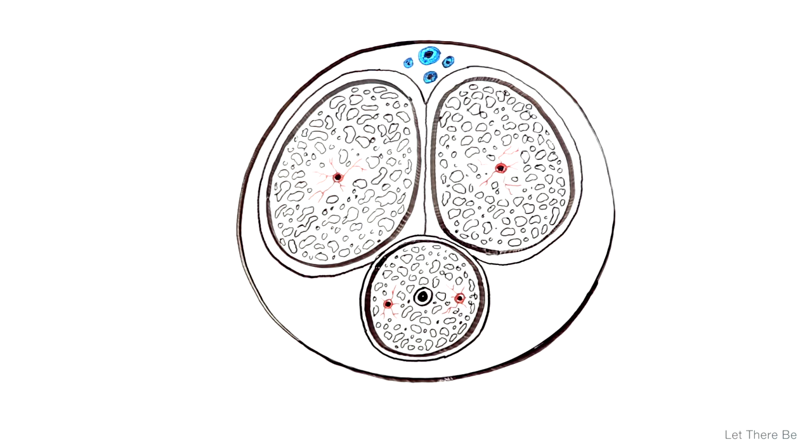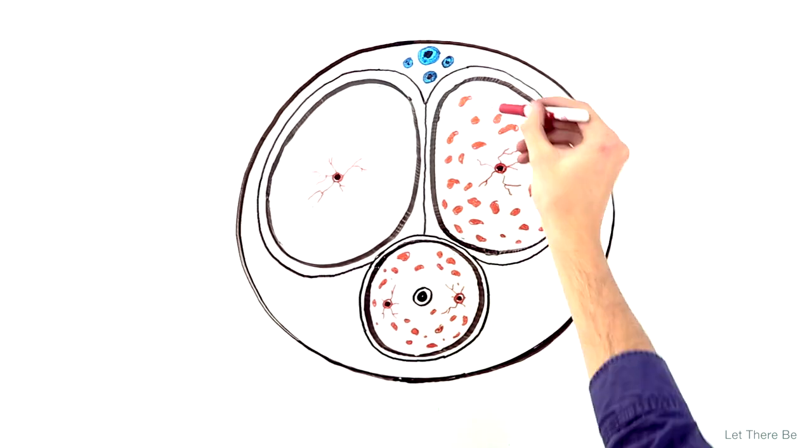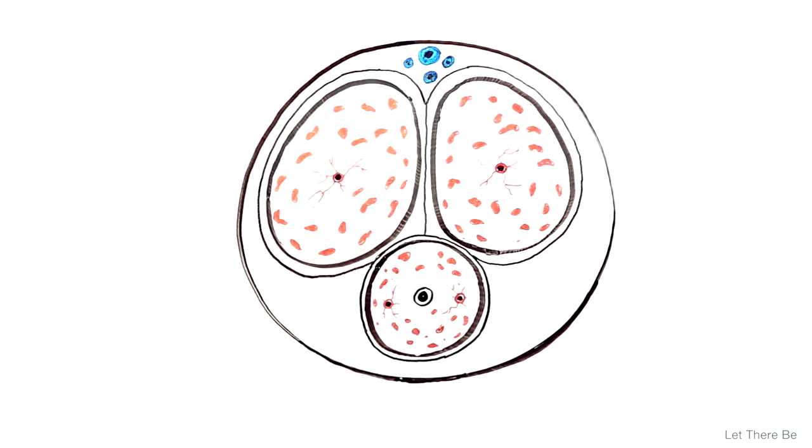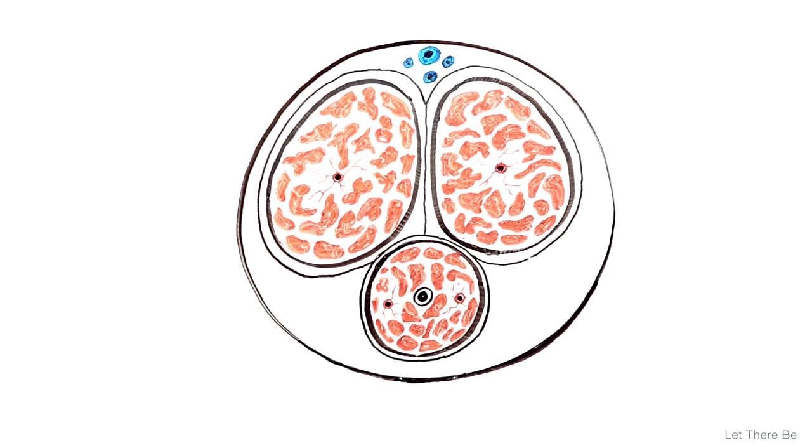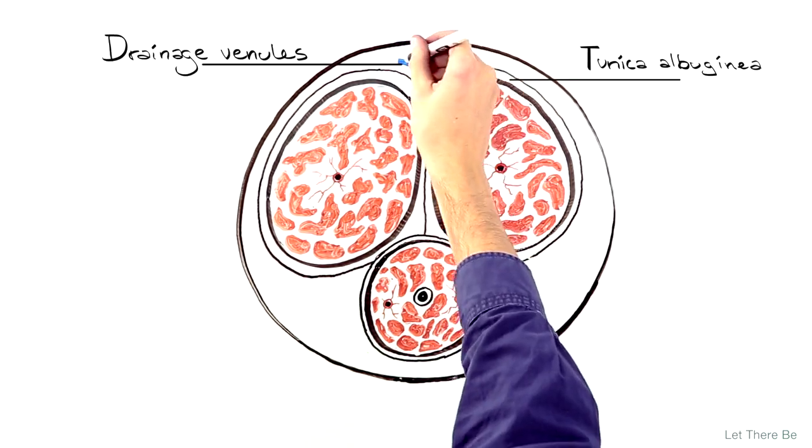As the erectile tissue relaxes, the lacunar spaces widen and become engorged with blood. As the tissue swells, it expands against the tunica albuginea, which presses against drainage venules, thus limiting blood flow out of the penis.